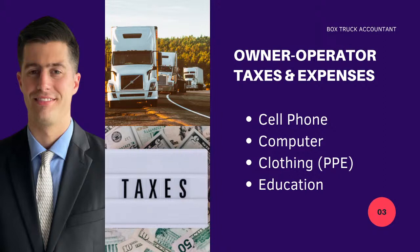Let's look at specific business expenses you should be accounting for in your box truck business. Cell phone: if you use one phone for both personal and business use, determine the percentage — for example 40% business — and multiply your bill by that percentage. If you have a separate cell phone used only for business (GPS, talking to your broker, dispatcher, or factoring company), that's 100% a business expense. Computer: if you're using it for QuickBooks, Excel, researching the DAT load board, checking rate cons, or uploading BOLs, that's a business expense.